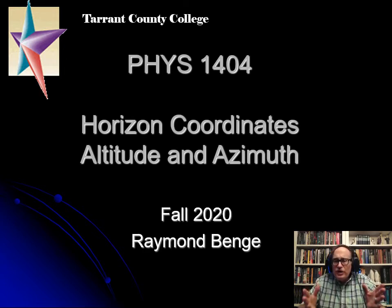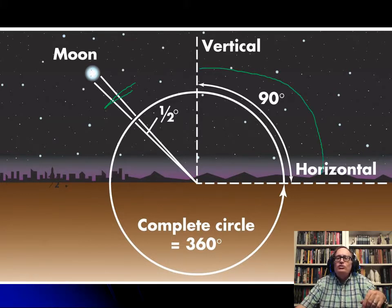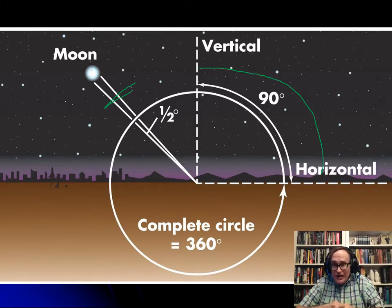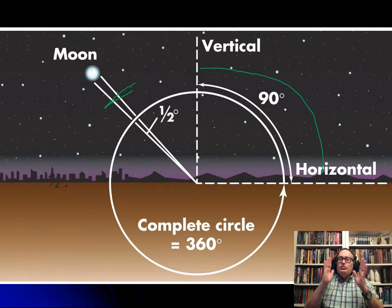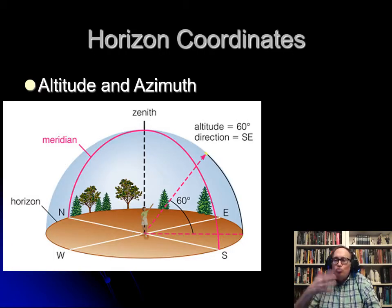We've talked about measuring positions and how, for example, in the sky, the moon's about half a degree across. Vertical to horizontal is 90 degrees. This gives rise to a way of telling where something is in the sky by the direction you're facing and by how high up you look. This is what we call the horizon coordinates.